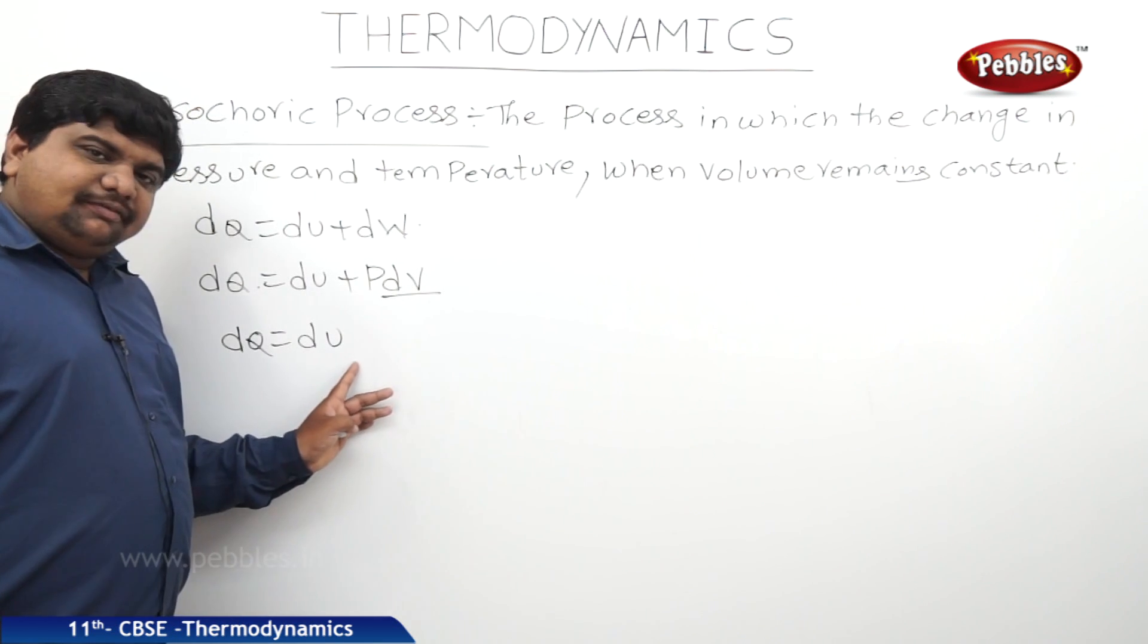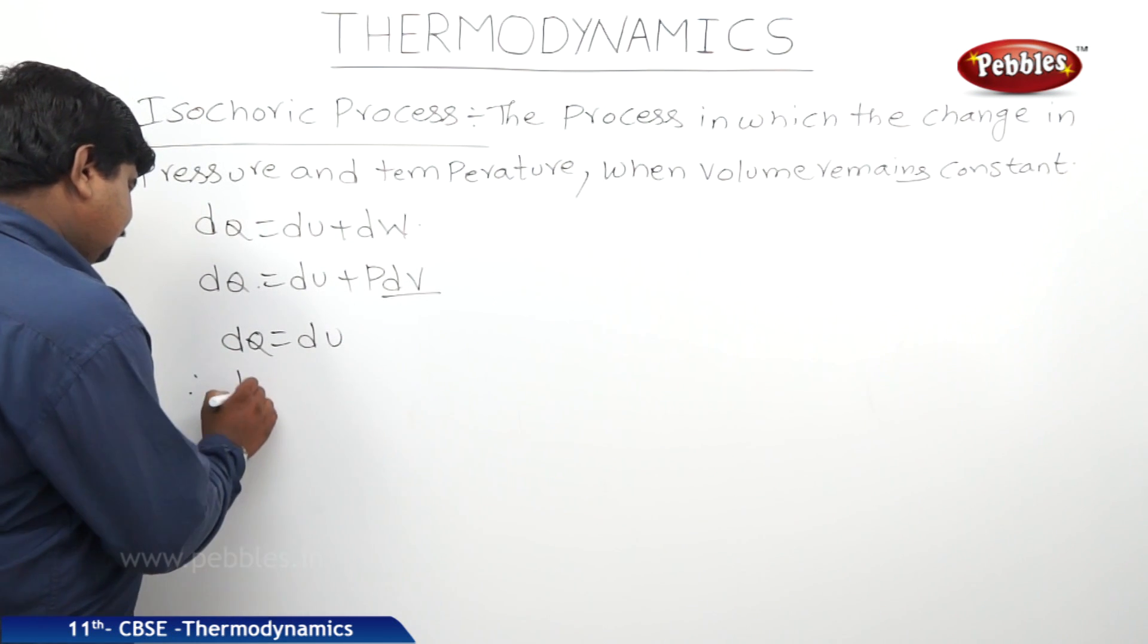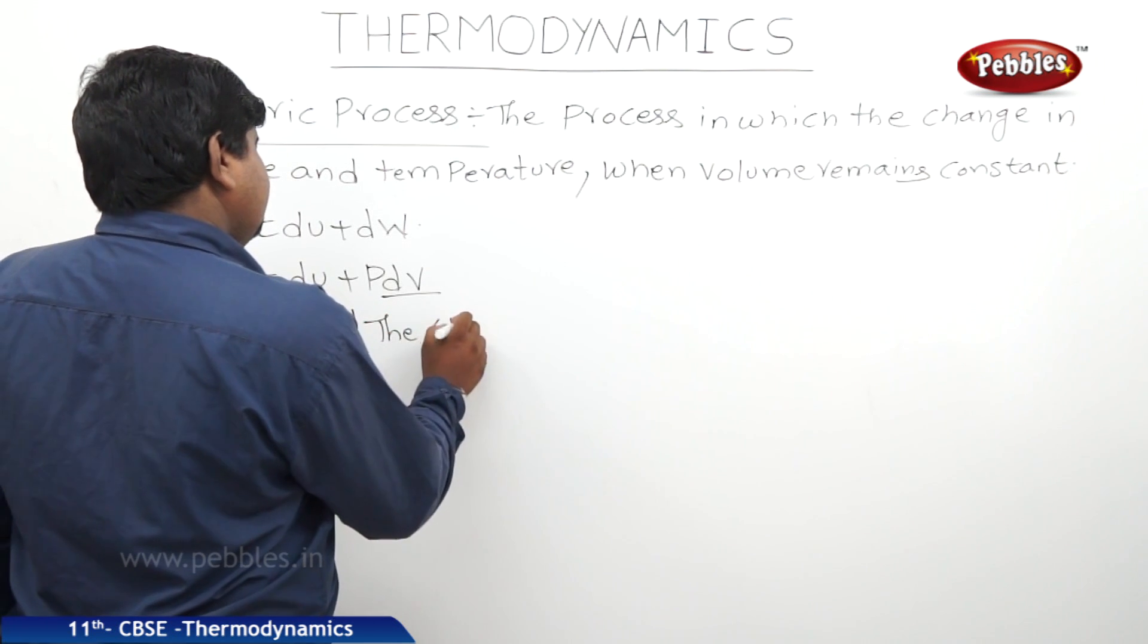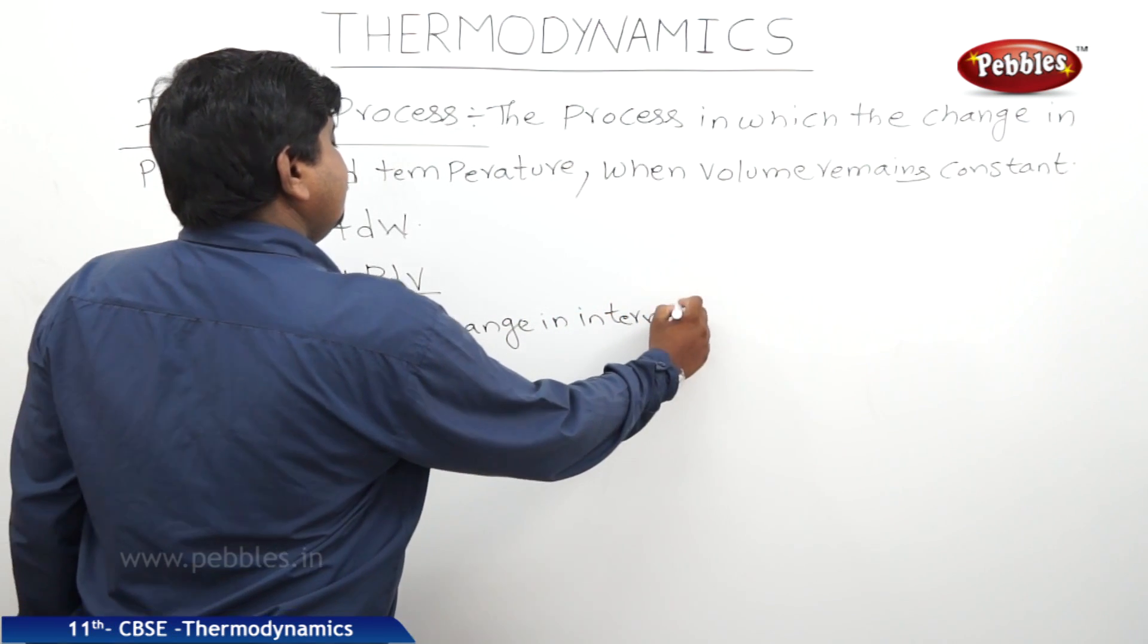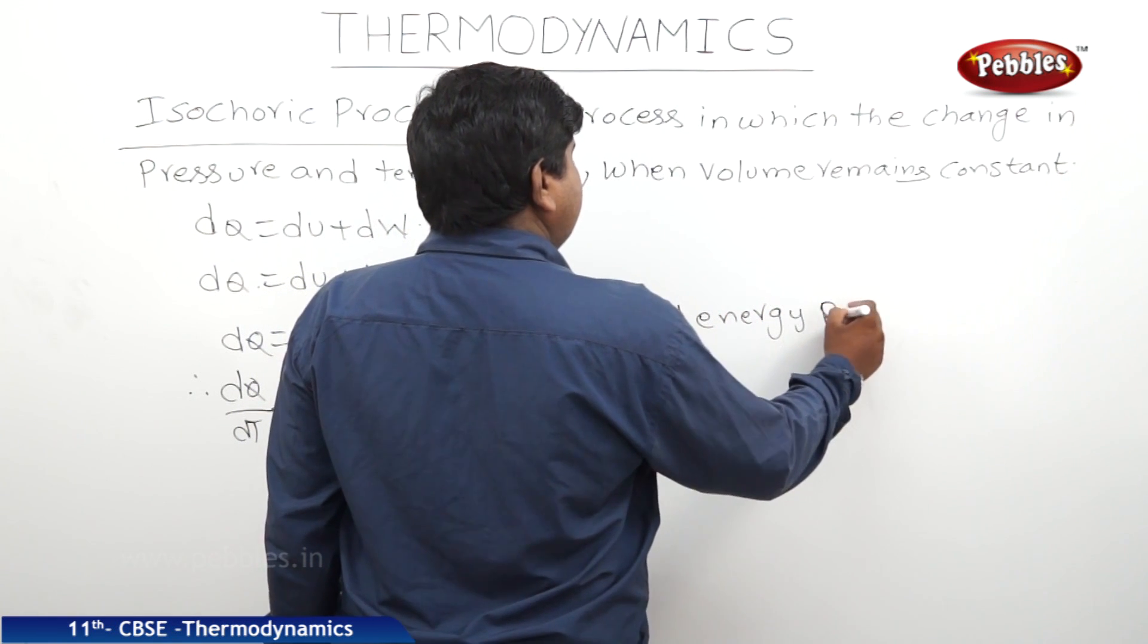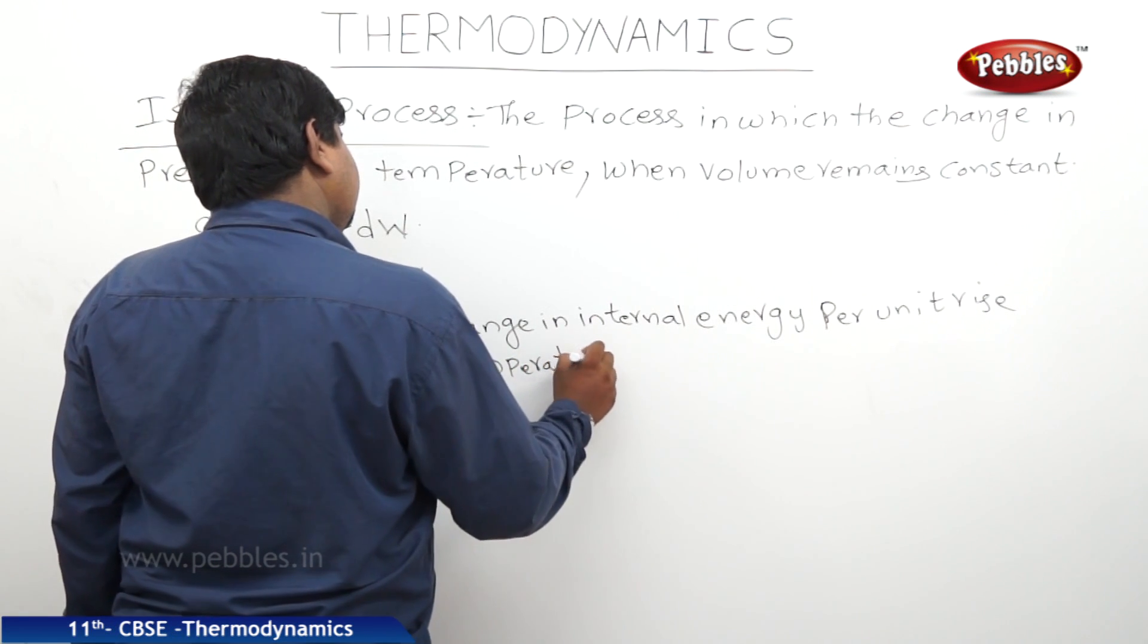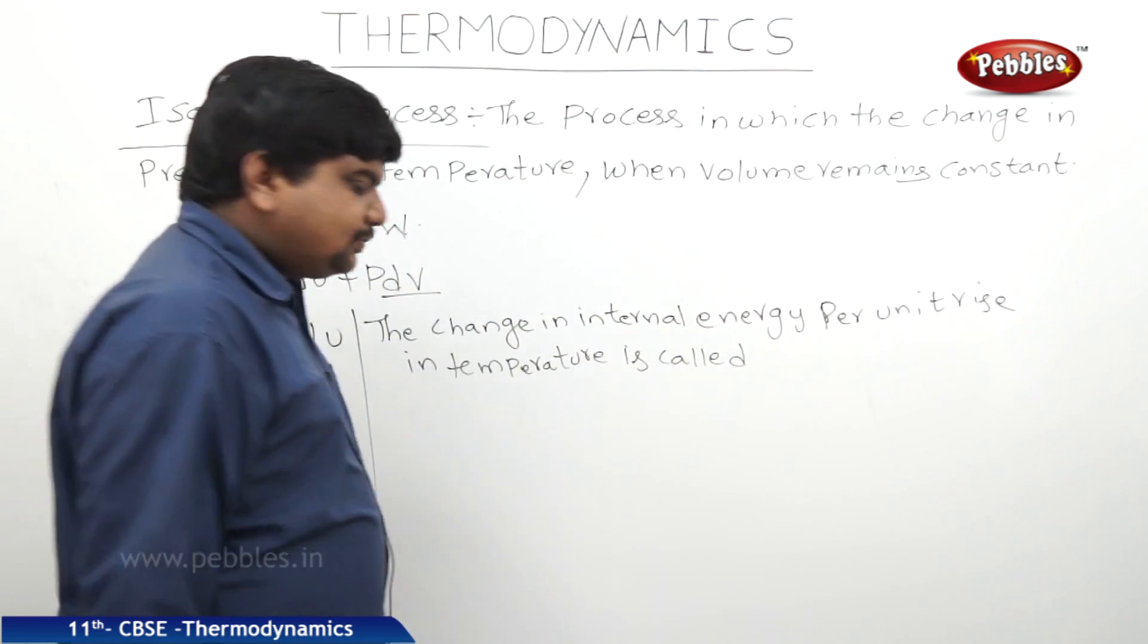The rate of change in internal energy, or dU by dT, is equal to the specific heat. dQ by dT equals dU by dT. Therefore, the change in internal energy per unit rise in temperature is called specific heat.